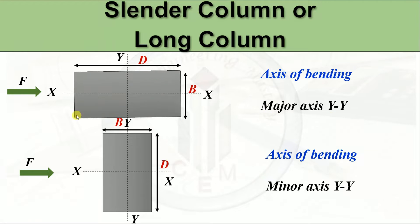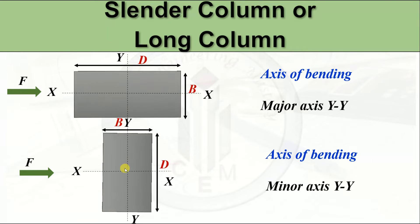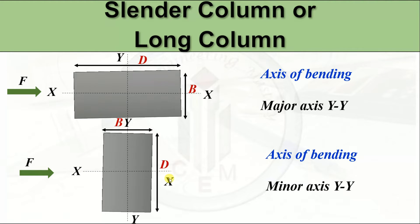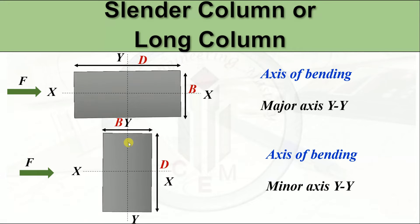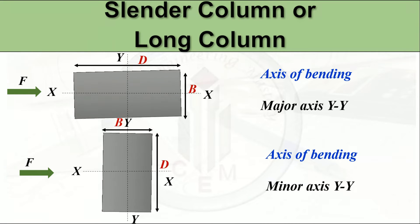When the force is applied in this direction, the axis of bending is the YY axis. Now let's look at this column where the orientation is different. When the force is applied on this column, the column tends to bend such that the axis of bending is the minor axis. Here Y is the minor axis and X is the major axis. The axis perpendicular to the longer dimension is the major axis, so X axis is the major axis. When the orientation of the column changes, the axis of bending will also differ.